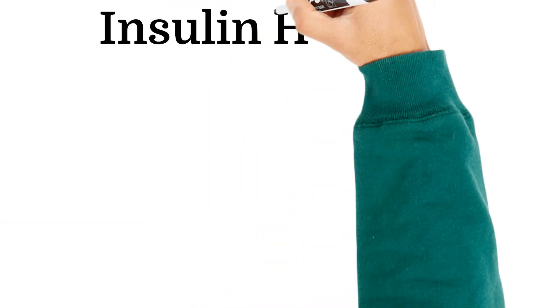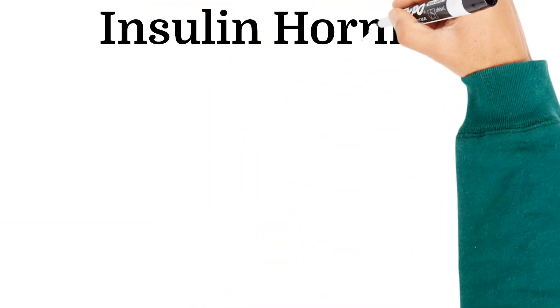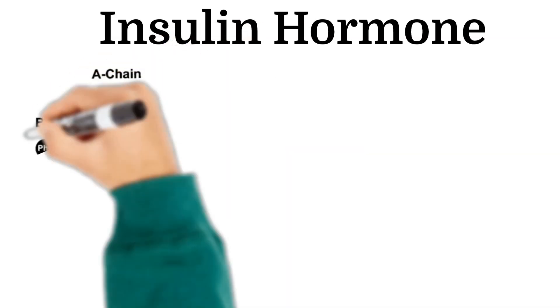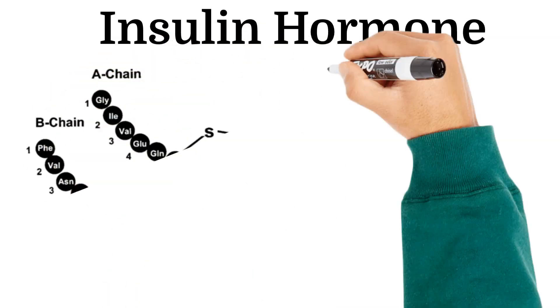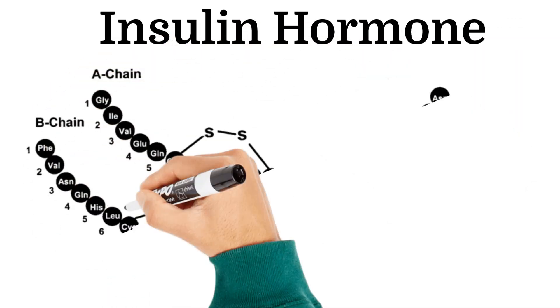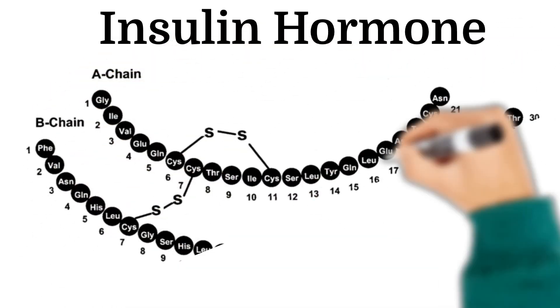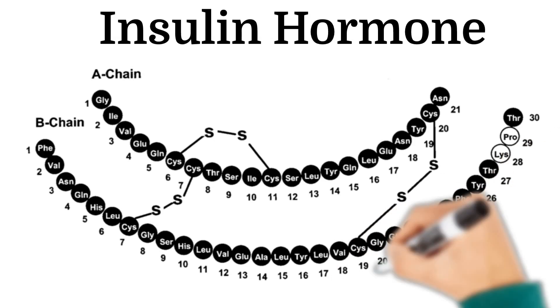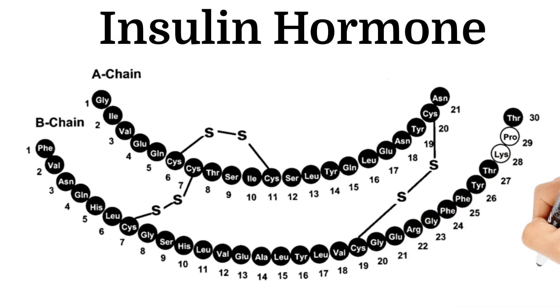Insulin is a dipeptide protein hormone consisting of an A-chain with 21 amino acids and a B-chain with 30 amino acids, held together by disulfide bonds.